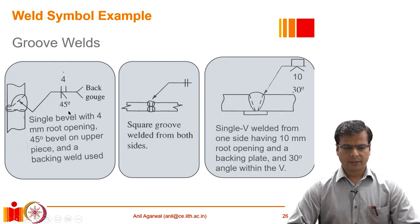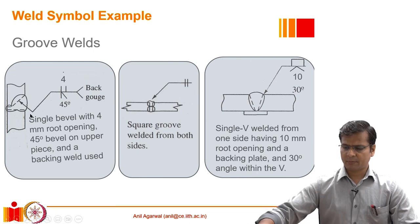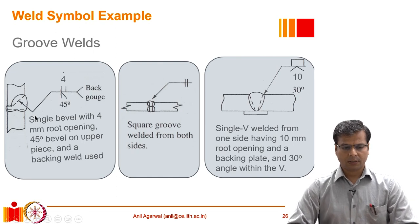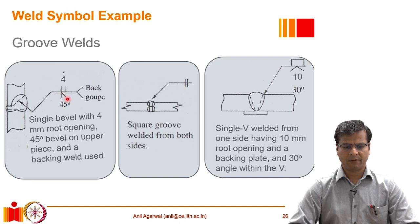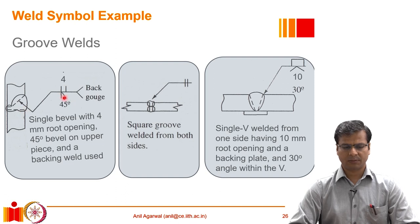Let us look at some examples of groove welds. Groove welds require many more details because there are more variables in the welding process. A square symbol represents a square groove, and a bevel symbol represents a bevel weld — meaning only one of the plates is grooved while the other remains square. The 45-degree angle in the symbol represents the angle of this bevel.